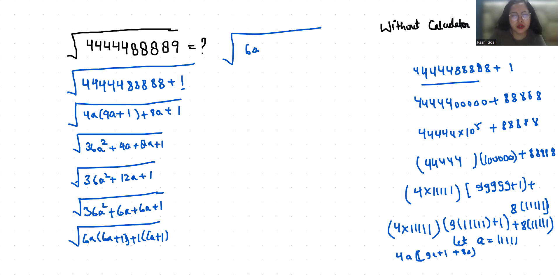So it becomes (6a plus 1) whole squared. With the help of this square root, the square removes, so 6a plus 1. Let's recall a is 11111, so 6 times 11111 plus 1.